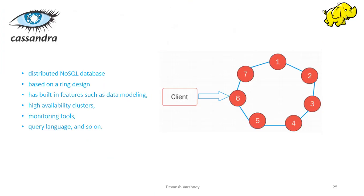Apache Cassandra is based on a ring design wherein all nodes play an equivalent role without any master concept. Compared to other architectures such as master-slave, legacy, or sharded designs, Cassandra is quite easy to set up and maintain, and is designed for handling a high volume of structured data across commodity servers.